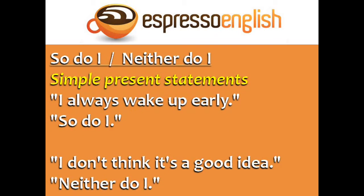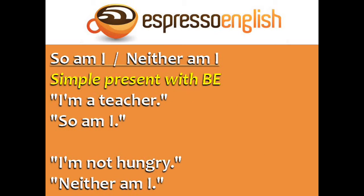Now let's learn a more advanced way to agree in English. You can say 'so do I' or 'neither do I' in response to simple present statements. For example: 'I always wake up early' — 'so do I'. 'I don't think it's a good idea' — 'neither do I'.